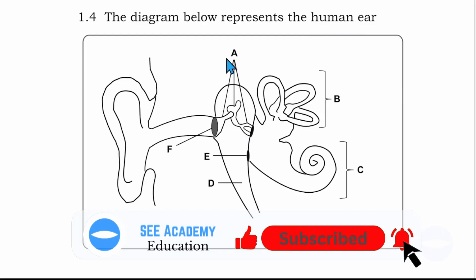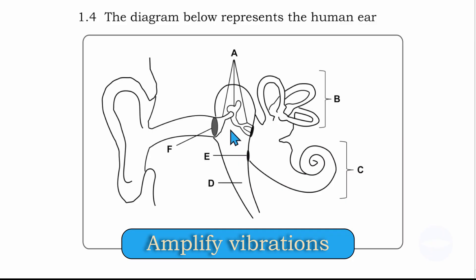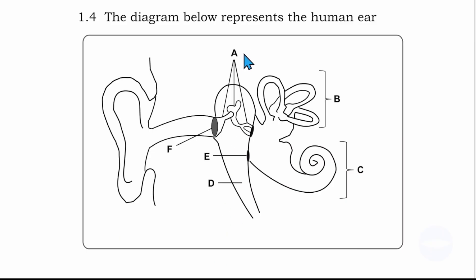Number A are ossicles. This is the three bones that are in the middle ear. Its function is to amplify vibrations. The three bones are ossicles, each bone has a name. This one is hammer, the middle one is anvil, and the last one is stirrup. But when they are all together, we call them ossicles. So number A is ossicles.